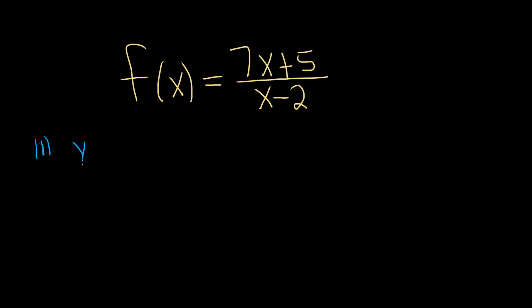So we have y equals 7x plus 5 over x minus 2. So the first step, all you do is just rename your f of x. The second step is also pretty easy. All you do in this case is just replace all of your x's and y's.